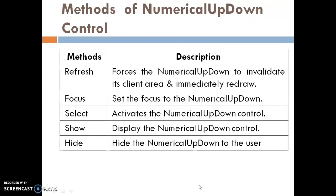These are the common methods of the Numerical Up-Down control. The first method is Refresh — it forces the control to invalidate its client area and immediately redraw. The second method is Focus — it sets the focus to the control. The next method is Select — it activates the control. The next method is Show — it displays the control. The last method is Hide — it hides the control from the user.